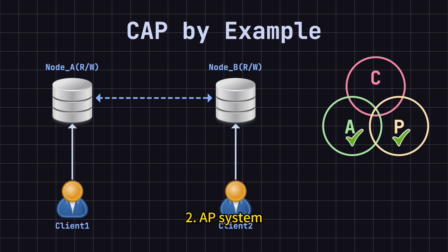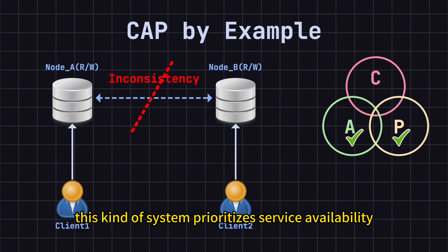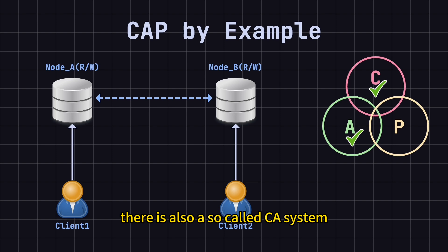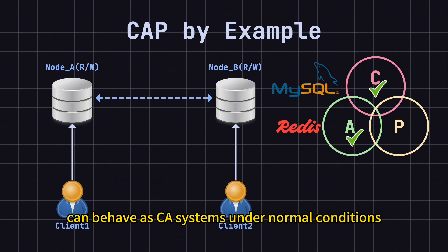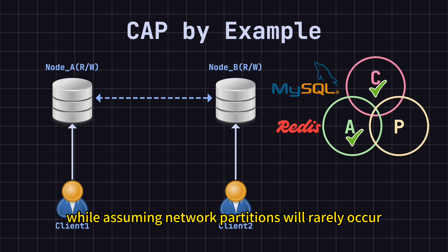Second, AP System. If we prioritize availability and partition tolerance, then during a network partition, the system will continue to accept and process read and write requests, but this might result in temporary data inconsistencies across nodes. This kind of system prioritizes service availability, allowing for short-term data inconsistencies. There is also a so-called CA system, but in strict terms, a CA system isn't possible in the real world because network partitions are inevitable. Some argue that a non-distributed system, without network partitions, can be considered a CA system. For example, a single-node deployment of MySQL, or Redis, can behave like a CA system as long as the node remains operational. Some distributed databases, assuming network partitions are unlikely, like in a single data center, can behave as CA systems under normal conditions, prioritizing consistency and availability, while assuming network partitions will rarely occur.